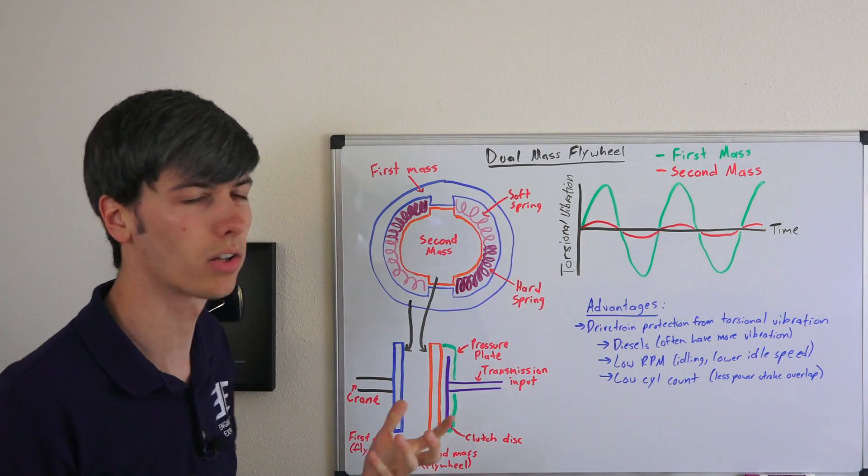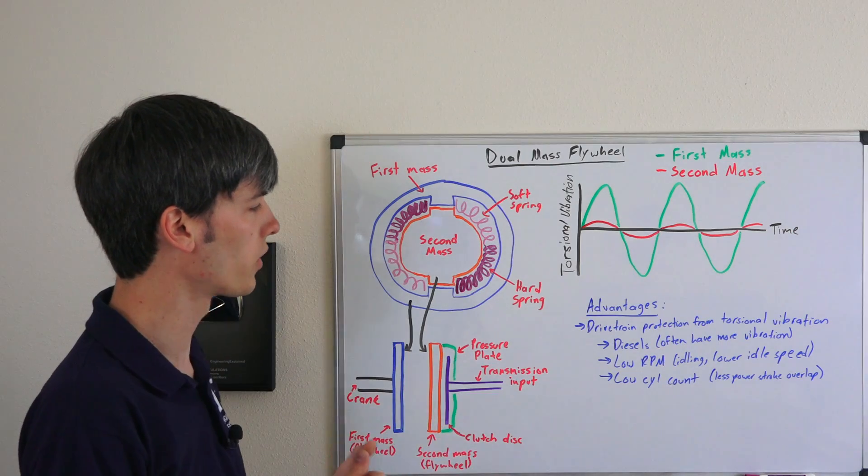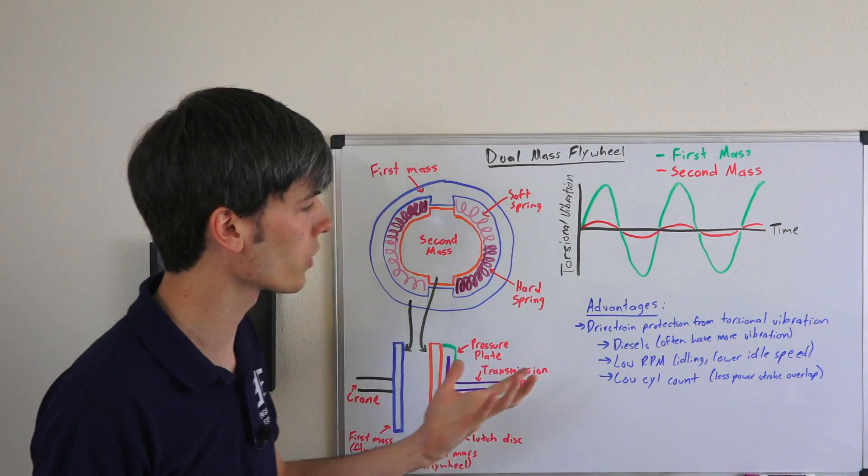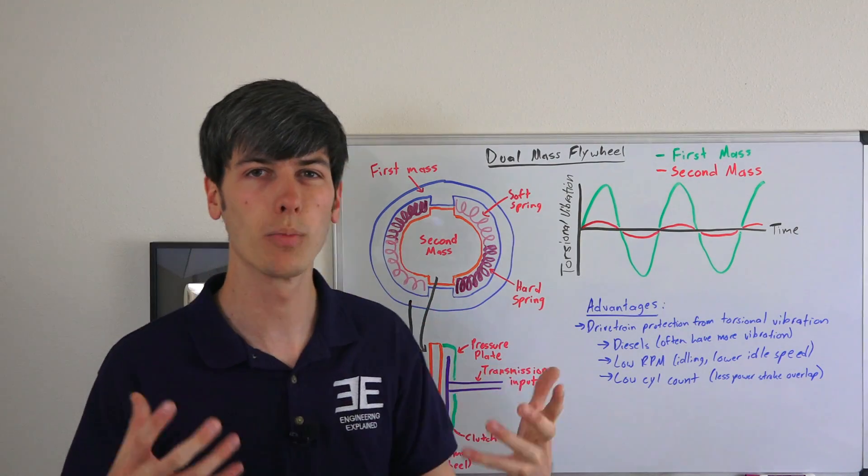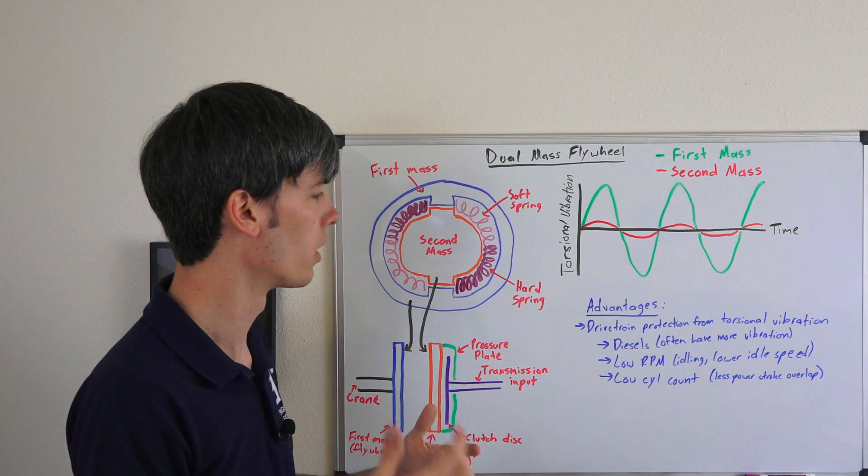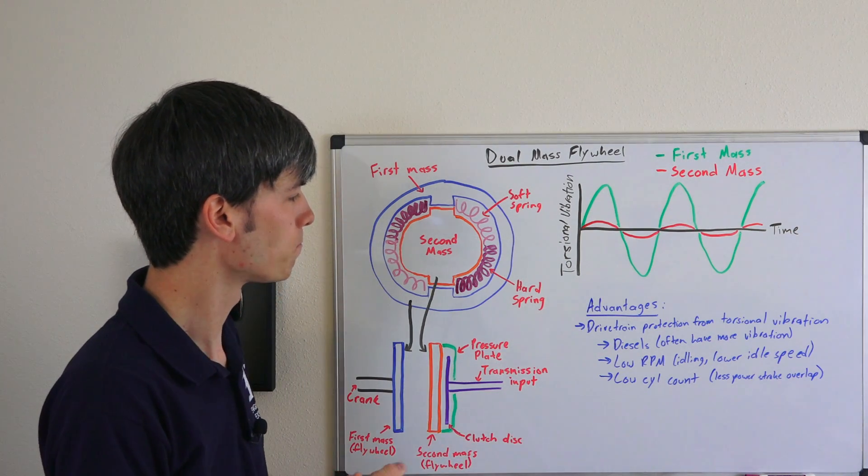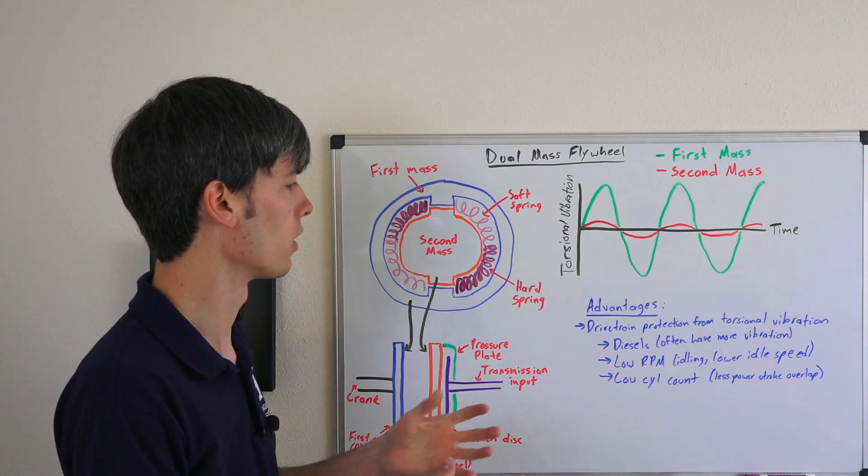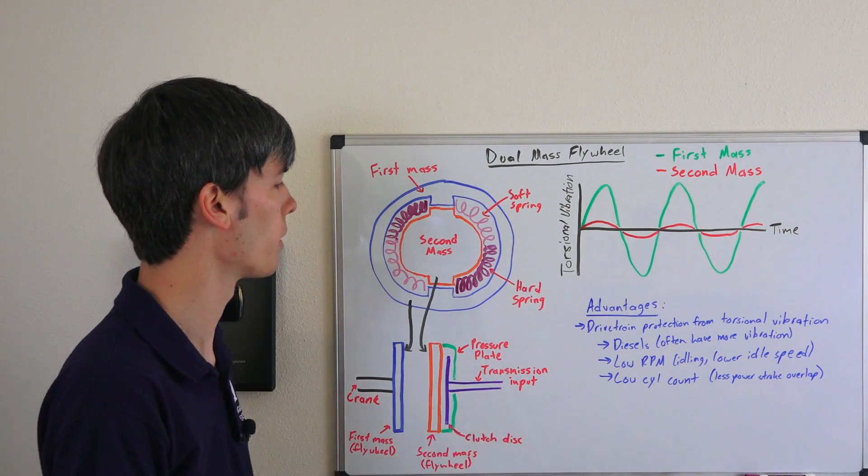Diesel engines, for example, have a lot more vibration as they have higher torques. Low rpm engines - if you're at idle you can actually, using a system like this, lower your idle speed because you won't have as much vibration reaching the transmission.